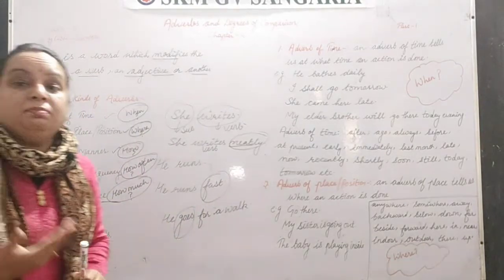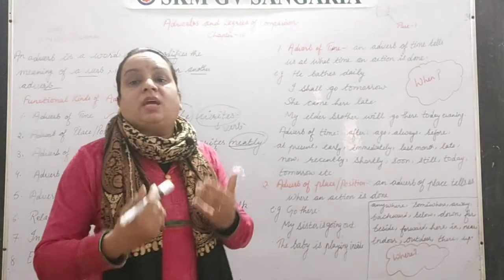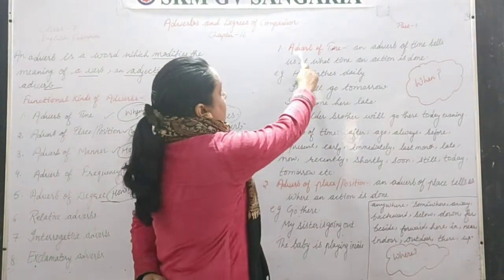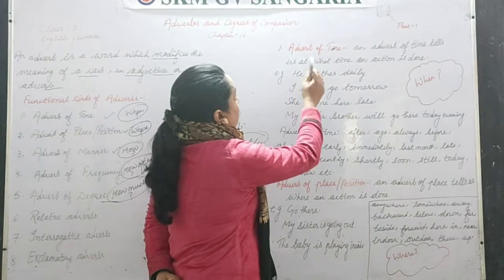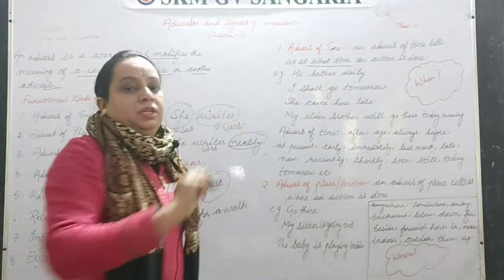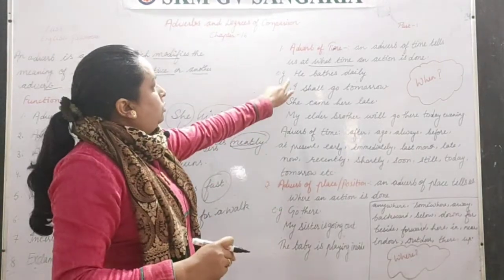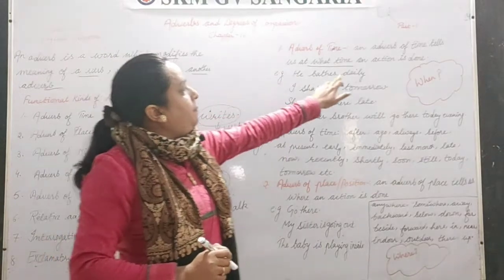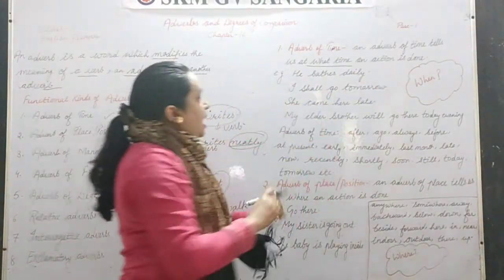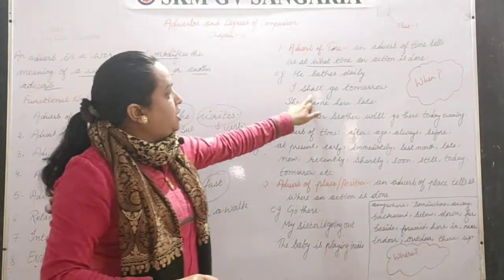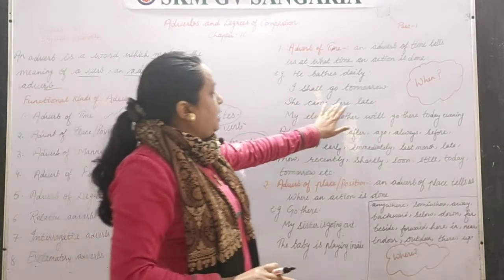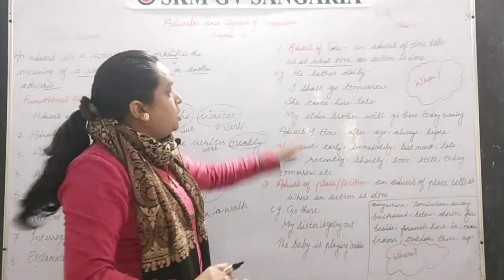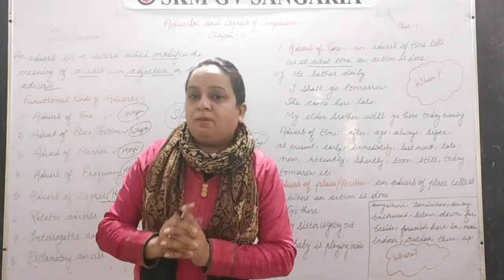Adverb of time tells us at what time an action is done — when it happened. For example: 'He baths daily.' The second sentence is 'I shall go tomorrow.' Third: 'She came here late.' Fourth: 'My elder brother will go there today evening.' These sentences all contain adverbs of time.